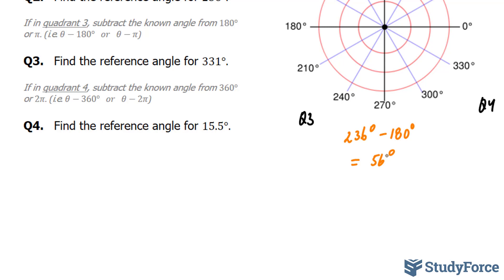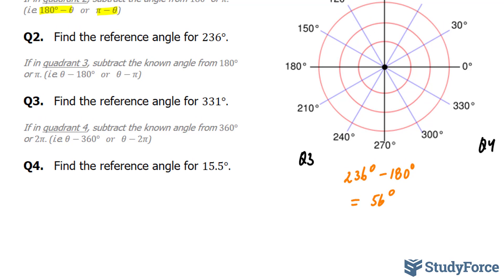In question 3, they ask, find the reference angle for 331 degrees. This time, our angle exceeds quadrant 1, 2, and 3. It's actually located here in quadrant 4. Whenever you have an angle in quadrant 4, you subtract the known angle from 360 degrees.